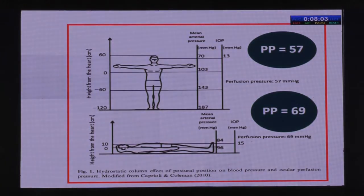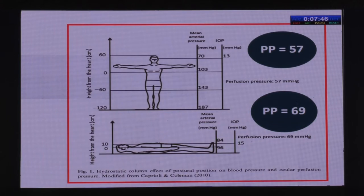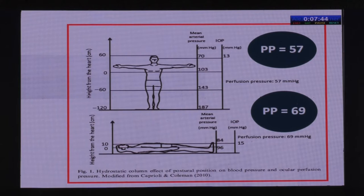The problem is that perfusion pressure values vary by body position. When standing, a person with a mean arterial pressure of 70 and an IOP of 13 has a perfusion pressure of 57; when lying down, the same person has a pressure of 84 and an IOP of 15, giving a perfusion pressure of 69. There is no single concrete value, so despite all these studies pointing in the same direction, they cannot specify a number.